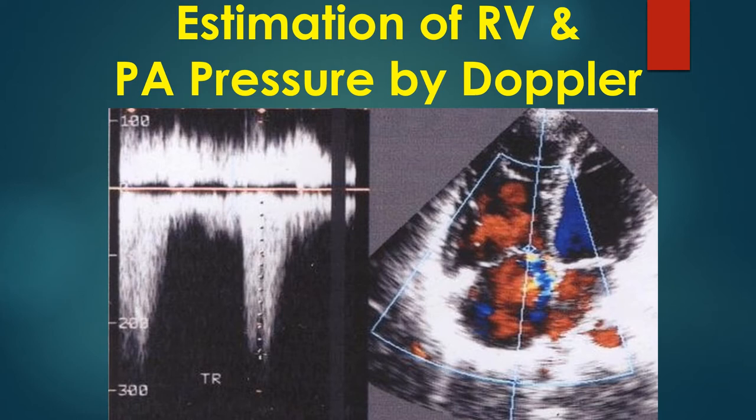There is some obliquity between the direction of the jet and the Doppler line. This can cause underestimation of the pressure. Though angle correction algorithms are available in modern echo machines, measurement errors may be magnified.